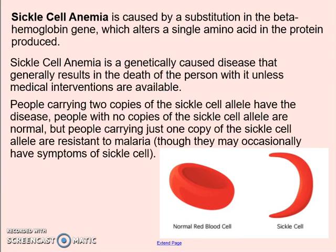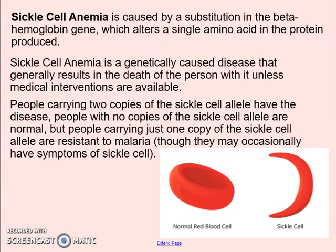Sickle cell anemia is a disease that people inherit. They have a single amino acid in the protein that's produced that's changed, and it can cause death unless medical steps are taken. A normal red blood cell carries oxygen and nutrients, but a sickle cell has a distorted shape that makes it much harder to carry those throughout your circulatory system. However, if people only inherit one trait from a single parent, they're called a carrier — they don't actually have the disease, but those people have been found to be resistant to malaria, so that would actually be a beneficial mutation.